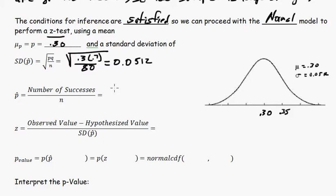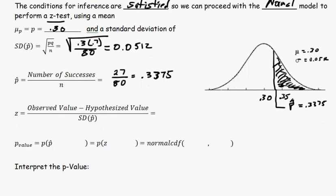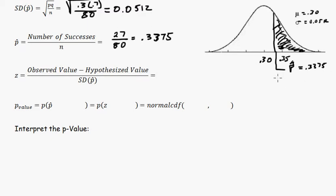So our number of successes, if you recall, was 27 out of 80. And so our p-hat is 0.3375. And that looks like it's right about there. p-hat equals 0.3375. So already you can kind of tell that that's quite a bit of area. So we're not really surprised, given the model. Looks like it's reasonably consistent with the model. But let's calculate the equivalent z-value just to confirm.